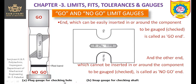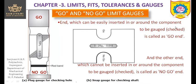This is the snap gauge — it is used for checking shafts, while the plug gauge is used for checking holes. The snap gauge has two ends: this is the go end and this is the no-go end. If the shaft is inserted in the go end and is not getting inserted in the no-go end, that means the size of the shaft lies within the specified limits. The end which can be easily inserted in or around the component is called the go end.